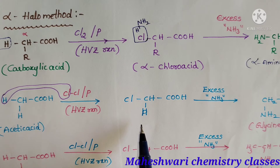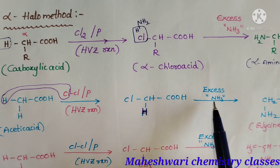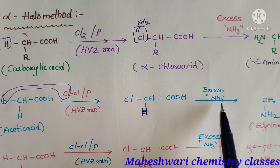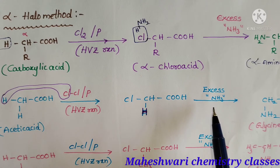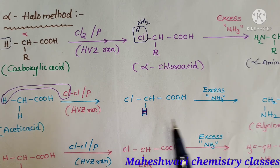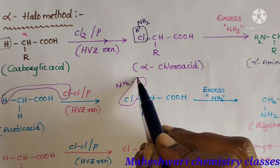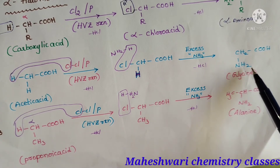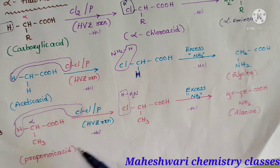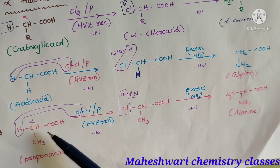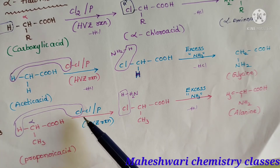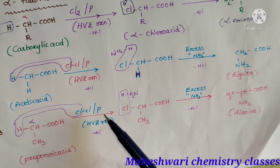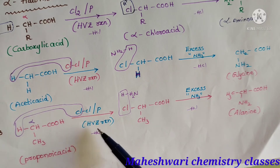Here HCl is eliminated and glycine is formed. Next, propionic acid reacts with chlorine in the presence of phosphorus.